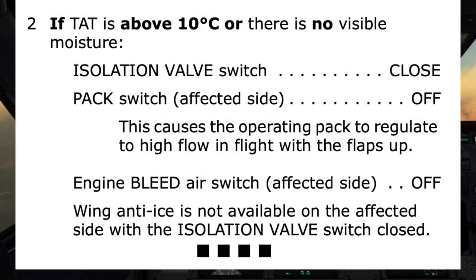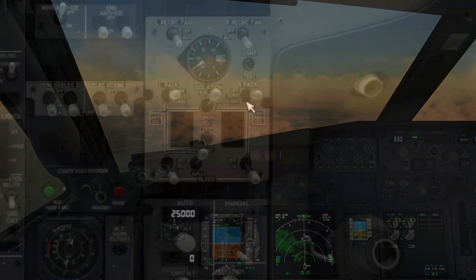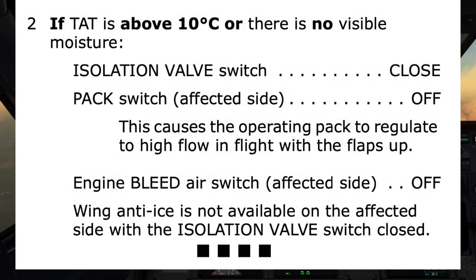Pack switch on the affected side — so right side — off. Note: this causes the operating pack to regulate to high flow, in flight, with the flaps up.